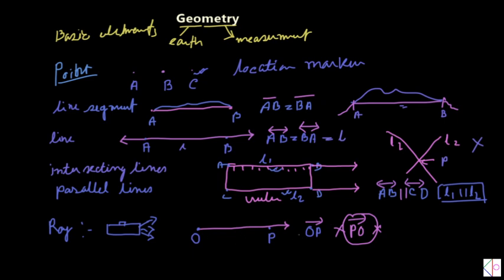Since the direction is OP, that is the ray. These are the basic building blocks of geometry: point, line segment, line — with two types: intersecting lines and parallel lines — and ray. Rail lines are also an example of parallel lines, showing how two lines that never meet at any position are parallel.